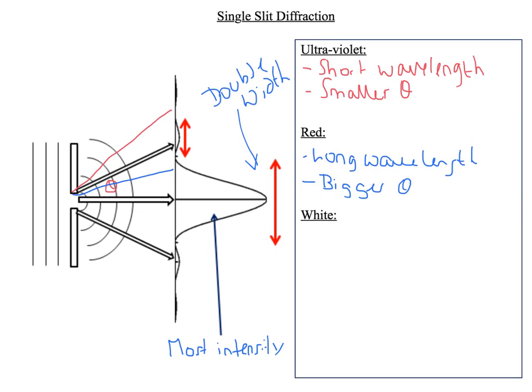With the violet... I said ultraviolet there, I was going a bit crazy. So we're just talking about visible spectrum here, so the violets, the blues, you'd expect to see here.